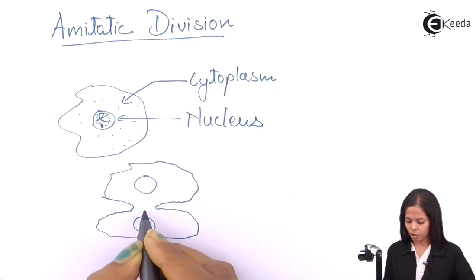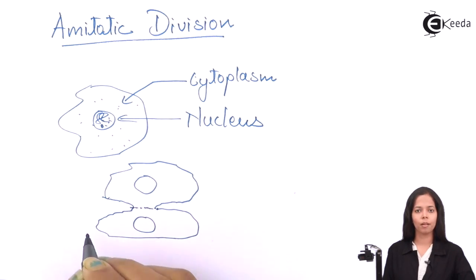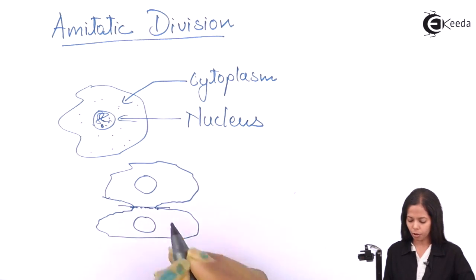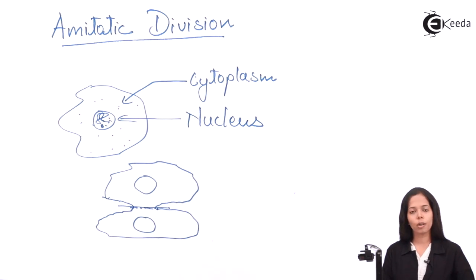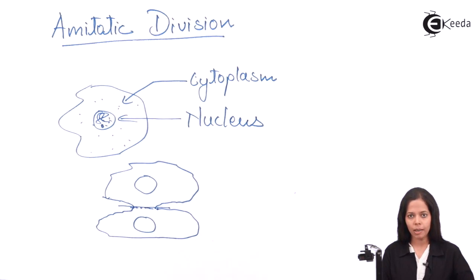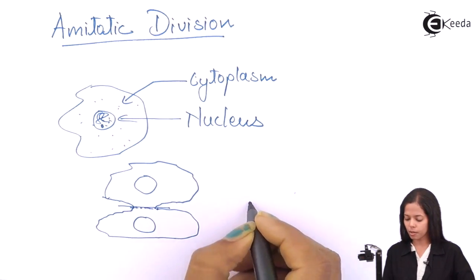The structure turns out to be like this, and gradually this point meets. When this point meets, the cytoplasm is totally divided. You can see the nucleus is equally divided, but the cytoplasm is not equally divided.